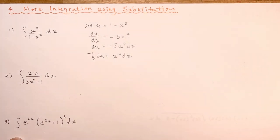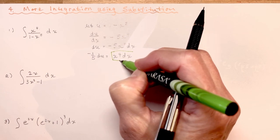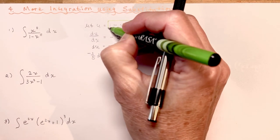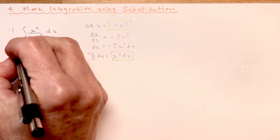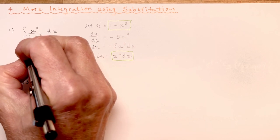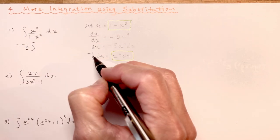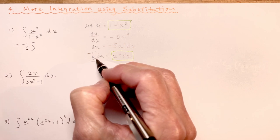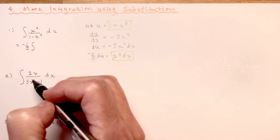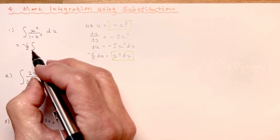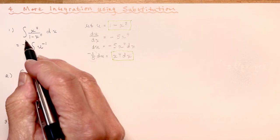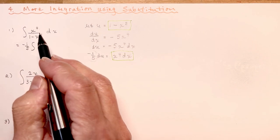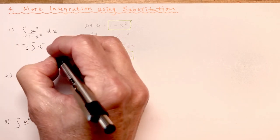Now you can see that I'm all set to substitute because what I have is what's in my numerator, and what I have here is what was in the denominator. So I'm going to take minus 1/5 of the integral — and remember, since it's a constant it goes in front — giving me minus 1/5 times the integral of u to the minus 1 du.